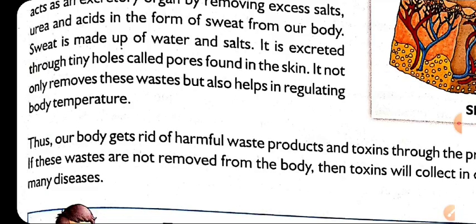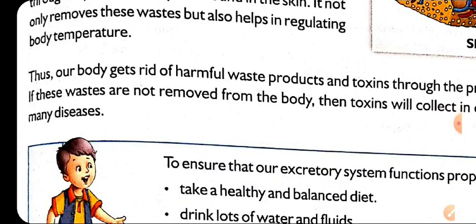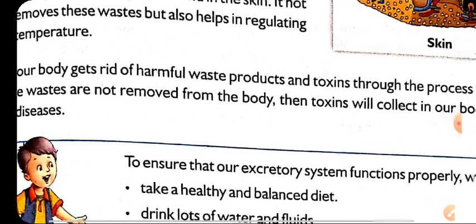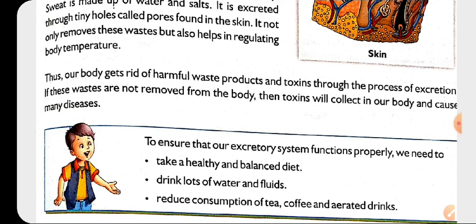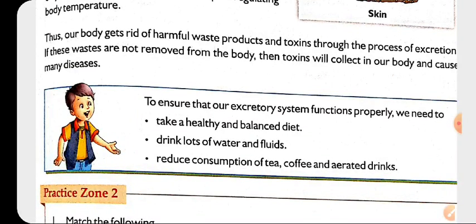Thus our body gets rid of harmful waste products and toxins through the process of excretion. If these wastes are not removed from the body, the toxins will collect and cause many diseases. This is the role played by the excretory organs such as lungs, skin, liver, and kidneys — to remove waste from our body and keep our body healthy.